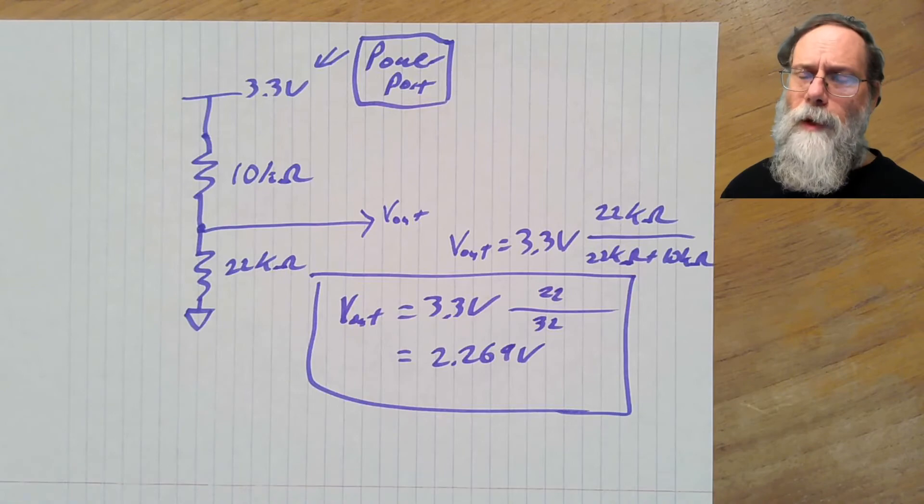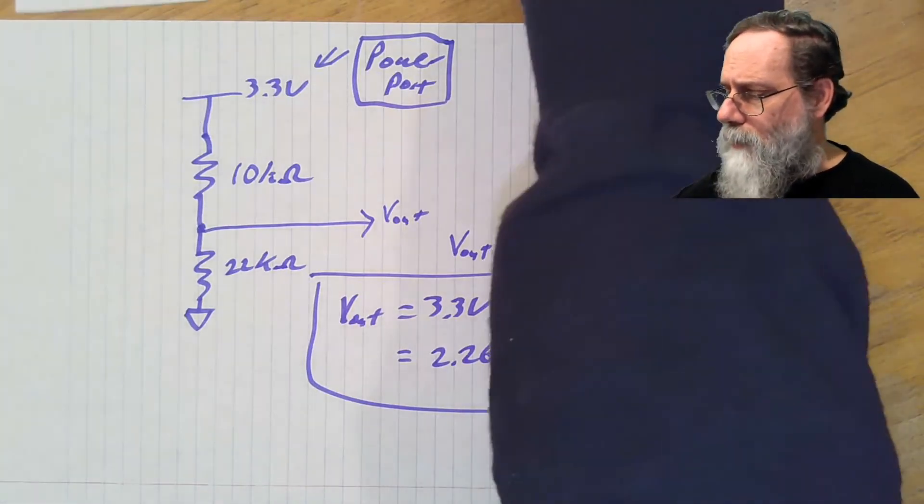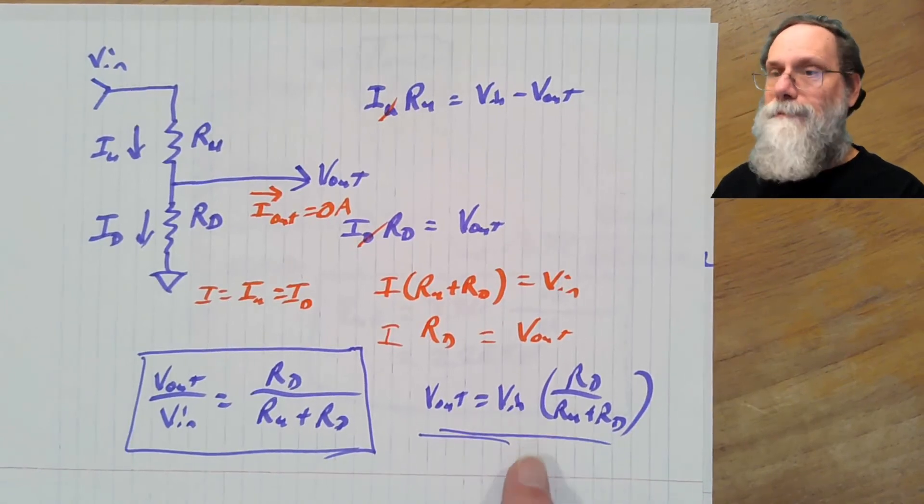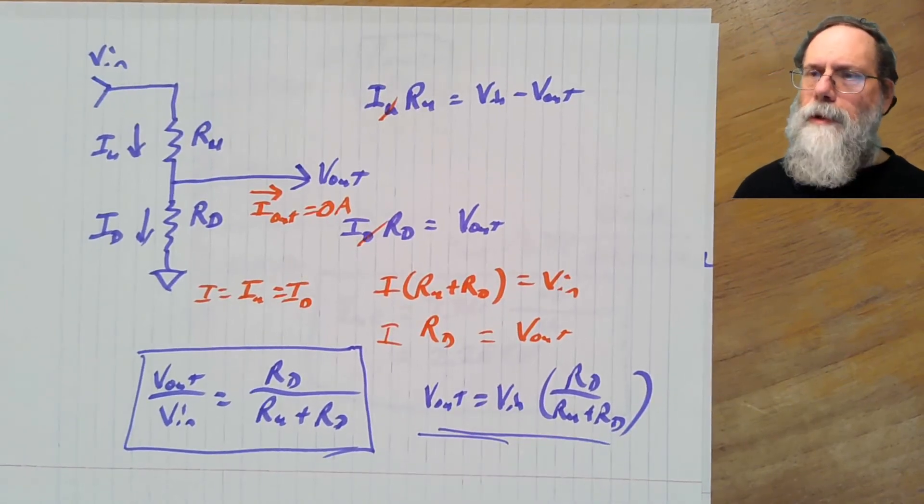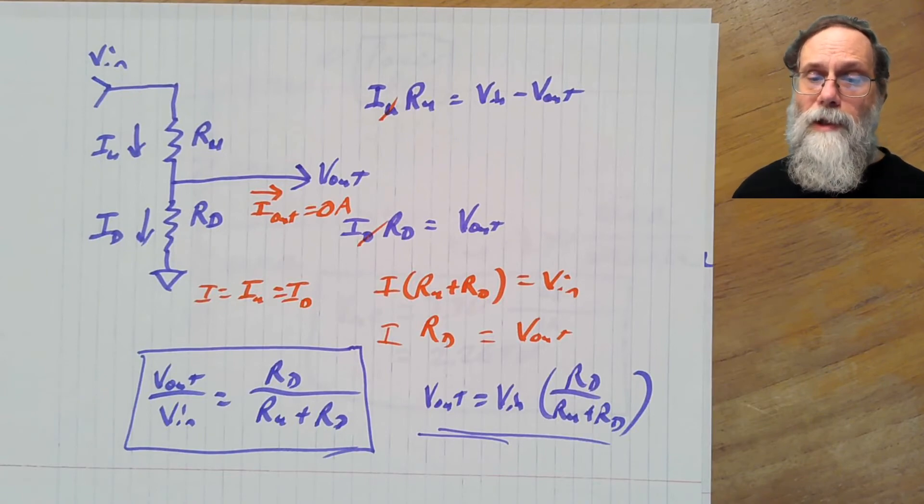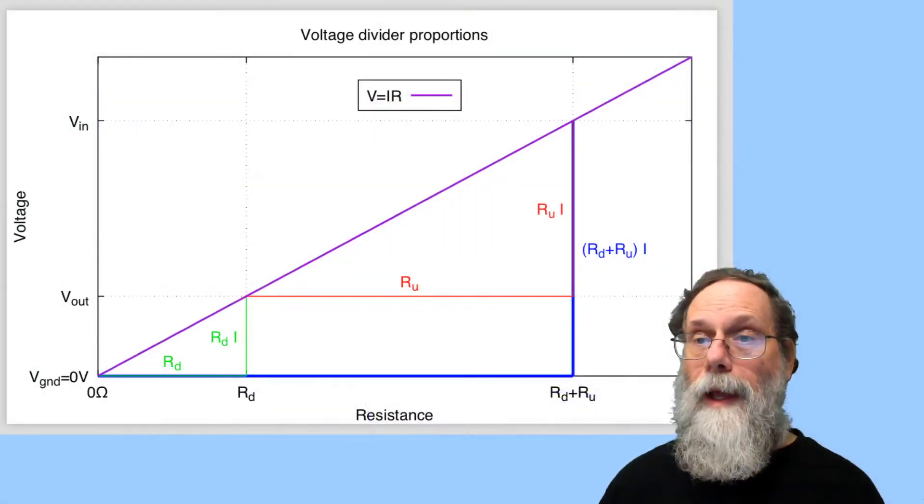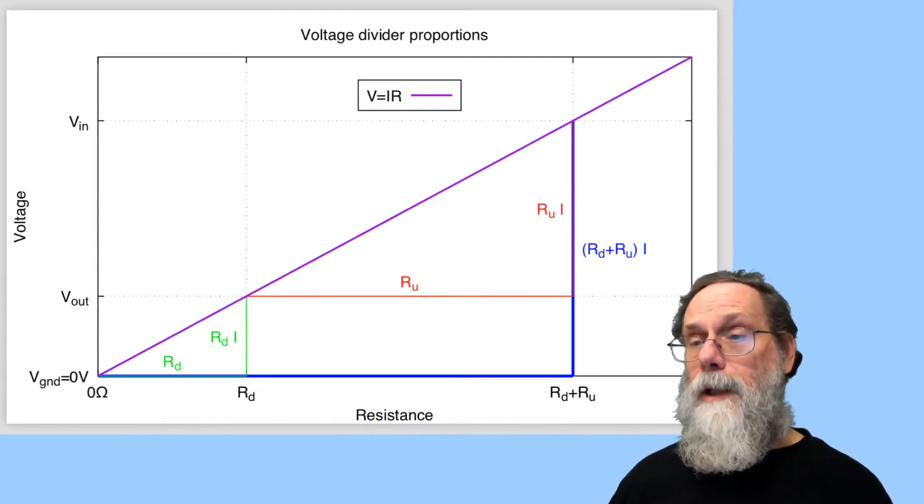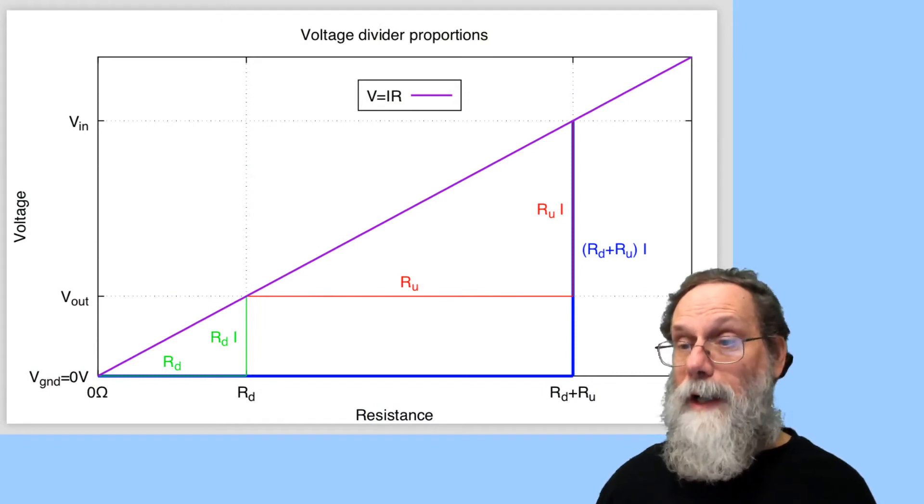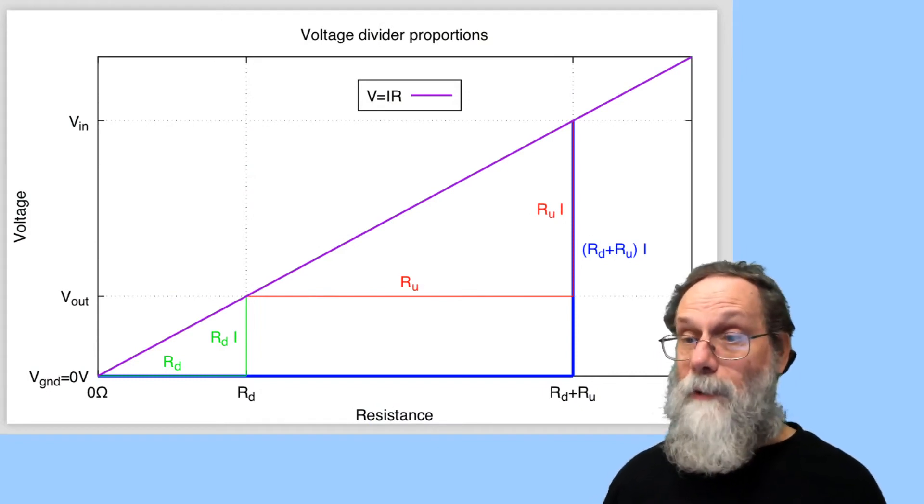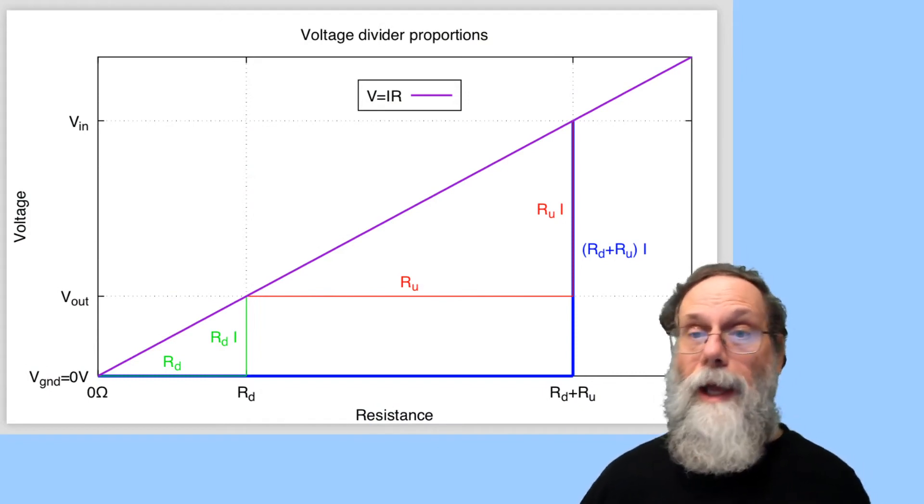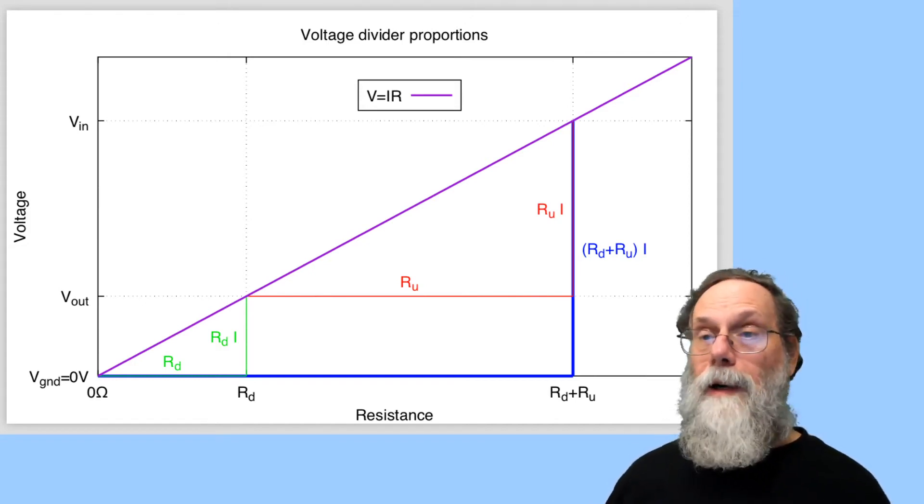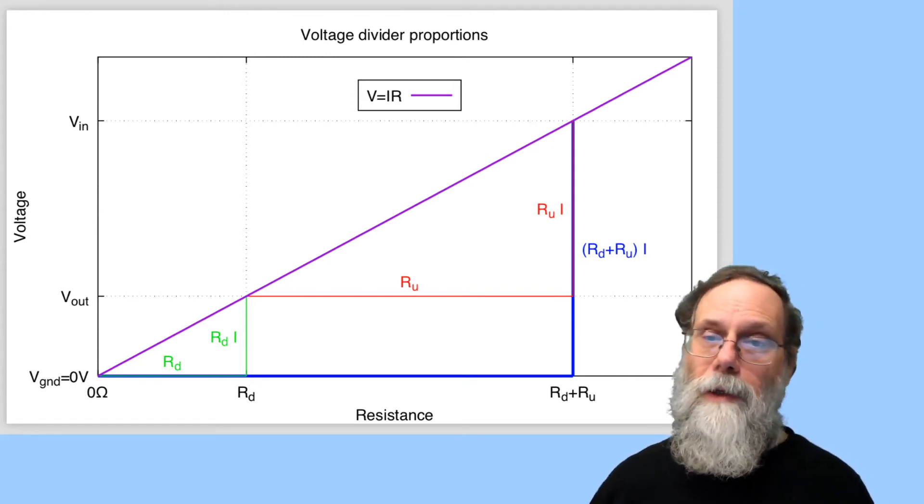Now, there are several different ways to think about the voltage divider formula. As I say, it's worth memorizing, so spend some time memorizing it. But there's a graphical way you can look at it that may make it a little easier to remember. And that's to look at it in terms of a linear relationship between voltage and resistance. V equals IR. Ohm's law is a linear relationship. It goes through zero, zero, and V is just scaled by the current from whatever R is.